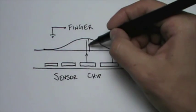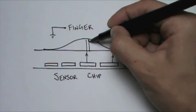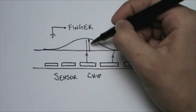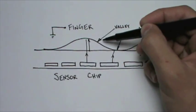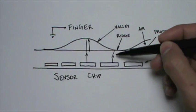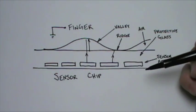Additionally, field lines that terminate into a valley must travel through a distance of air, and air has a particularly low permittivity or dielectric constant than the glass. Therefore the capacitance of this plate, which is covered by a valley, is a little bit lower than the capacitance of this plate, which is covered by a ridge.